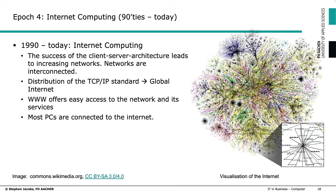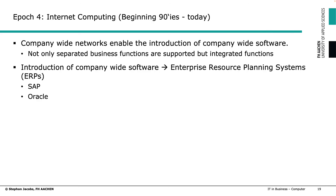What influence does this have on computing in business? If you think about the internet, it's not only the internet — it's also some 20 years of experience with business software on PCs and computers. In the first years, because computers weren't powerful enough and people had to gain experience, they focused simply on one domain — for example, production, finance, or marketing.